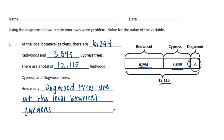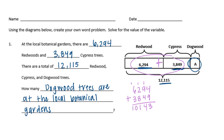To solve, I'll start by figuring out how many redwood and cypress trees there are by adding them together: 6,294 plus 3,849. Four plus 9 is 13, carry the 1; 1 plus 9 plus 4 is 14, carry the 1; 1 plus 2 plus 8 is 11, carry the 1; 1 plus 6 plus 3 is 10. That gives us 10,143 redwood and cypress trees.